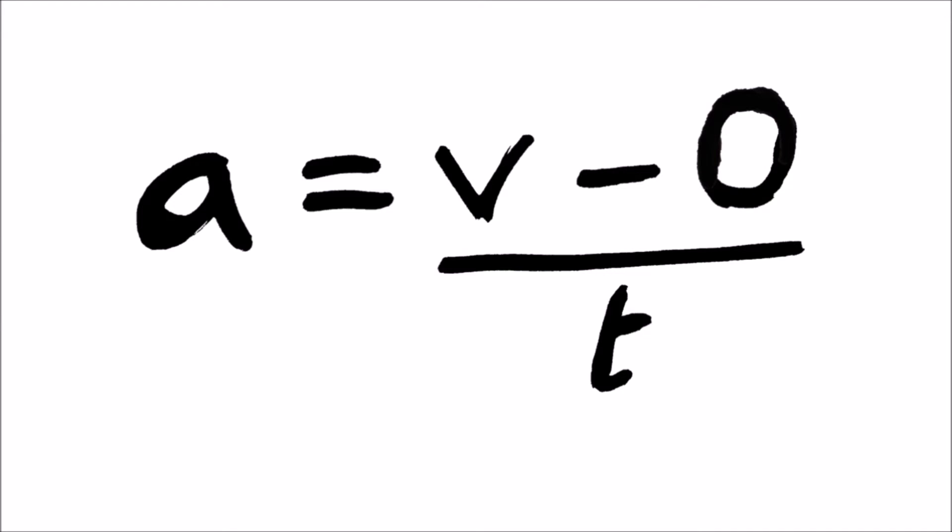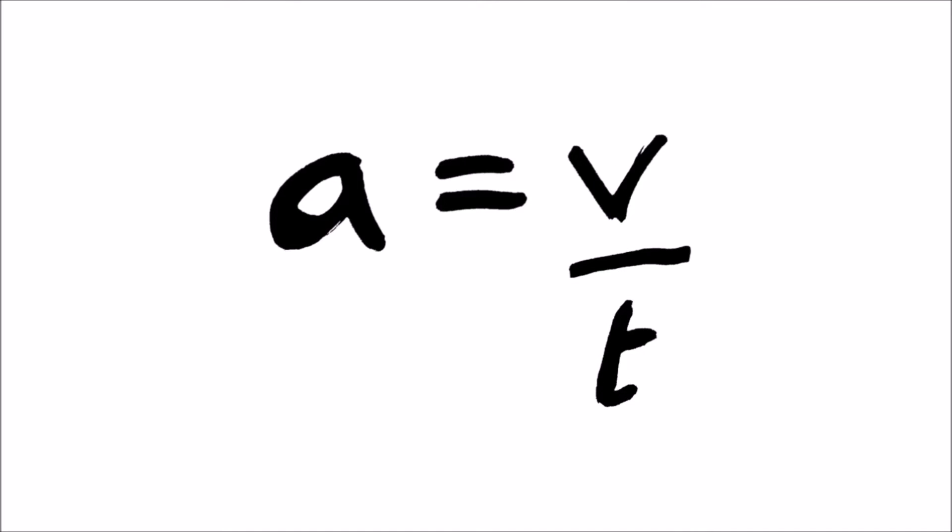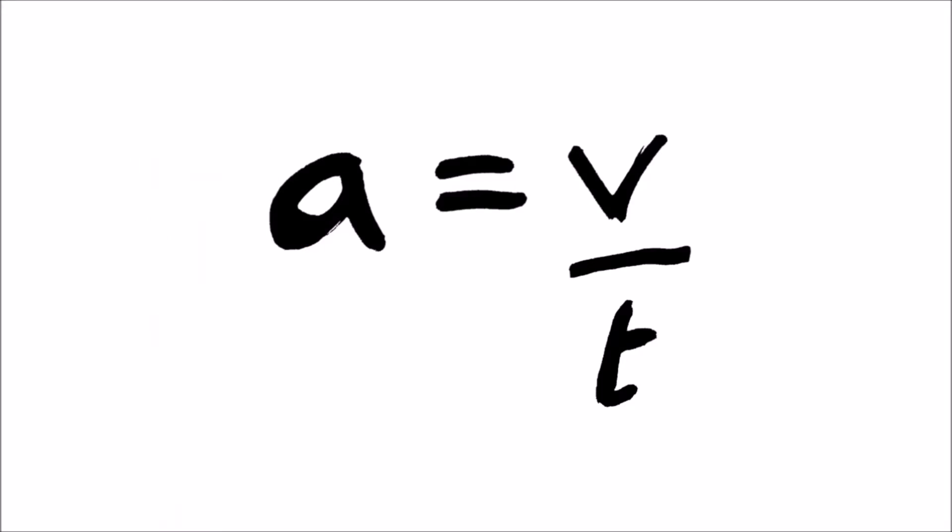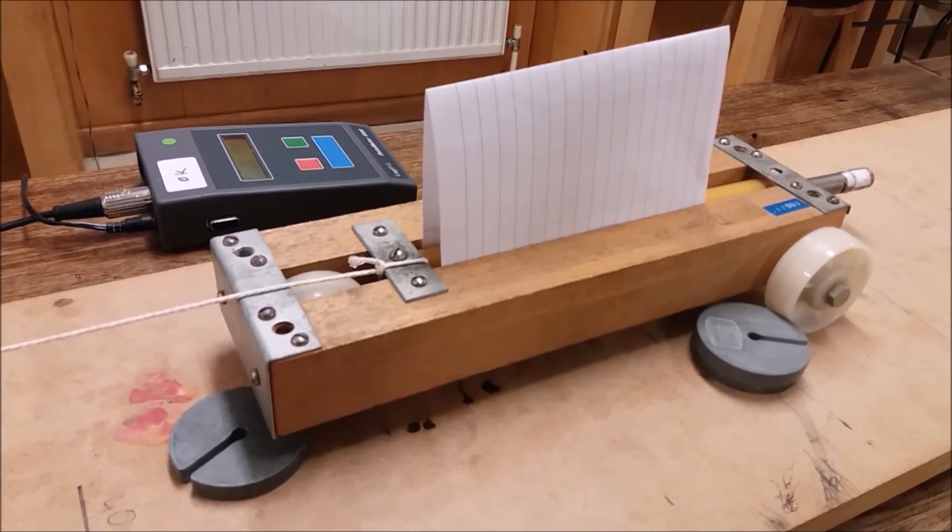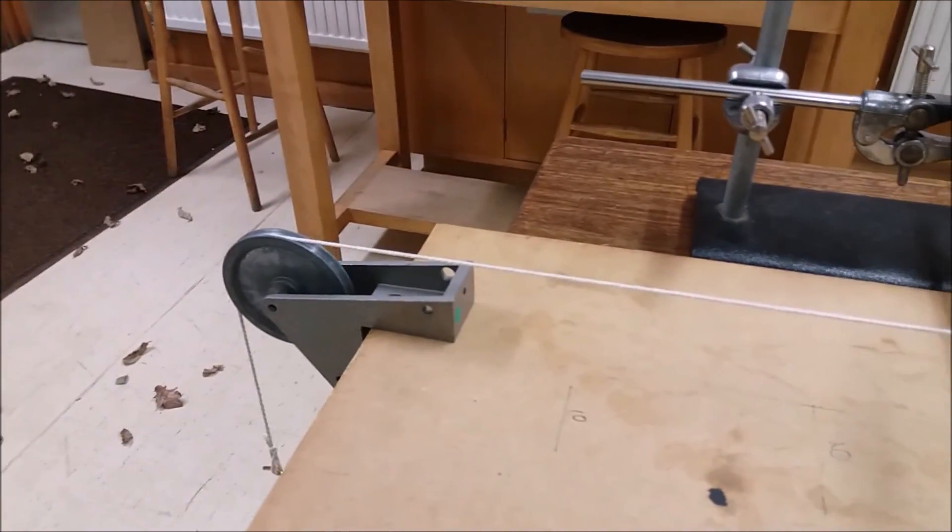This makes my acceleration equation a bit simpler since I just need to measure the final speed using the light gate and divide this with how long it took my trolley to reach this speed. Basically, I'm measuring the time from when I let it go to when it's gone through the light gate.